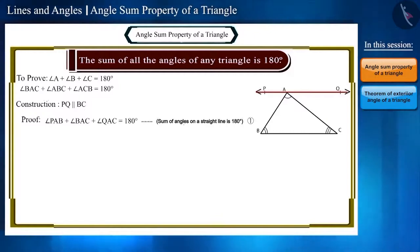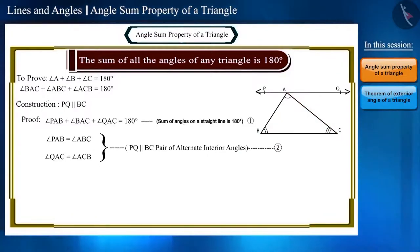And because line PQ and line segment BC are parallel, so now we will use the properties of transversal. Therefore, angle PAB is equal to angle ABC and angle QAC is equal to angle ACB because these are pairs of alternate interior angles.